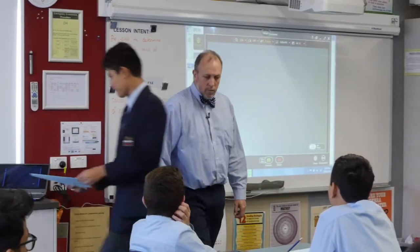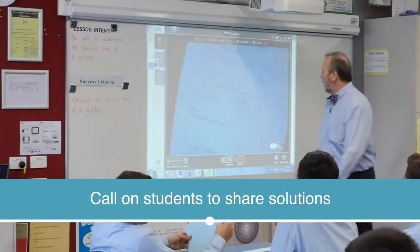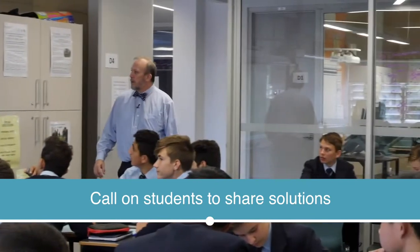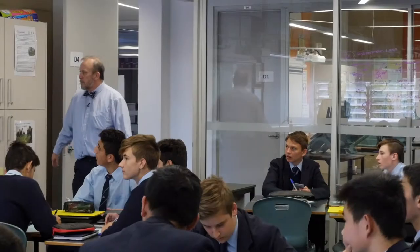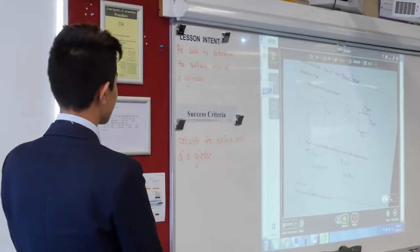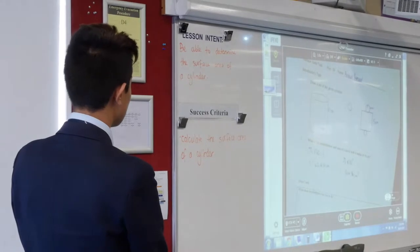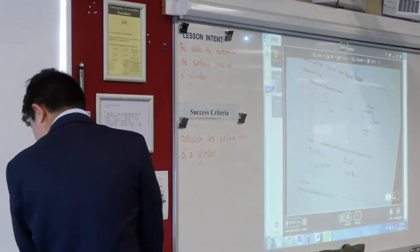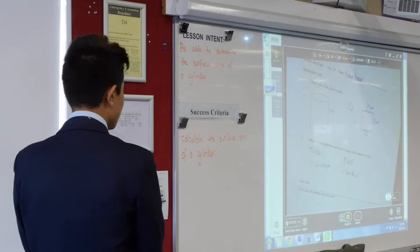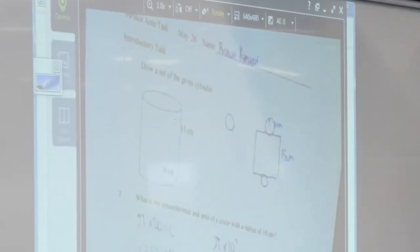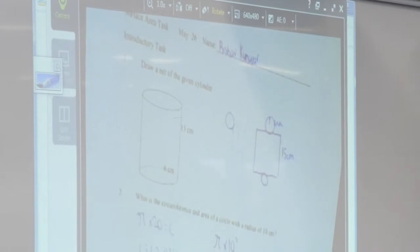Rishav is going to show us what he's got. For the first one, he drew a net of the cylinder and labeled the lengths that were given. For the second one, to find the circumference, you need to do diameter times pi. The diameter is twice the radius, which is 20, so 20 times pi gives a circumference of 62.8 cm.